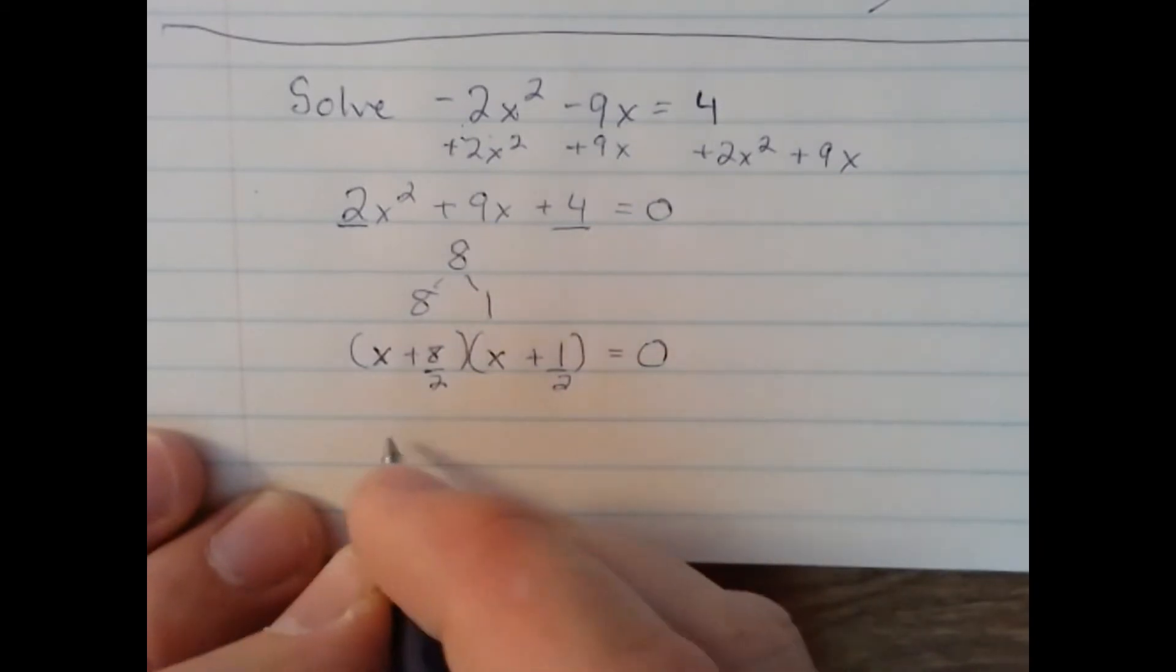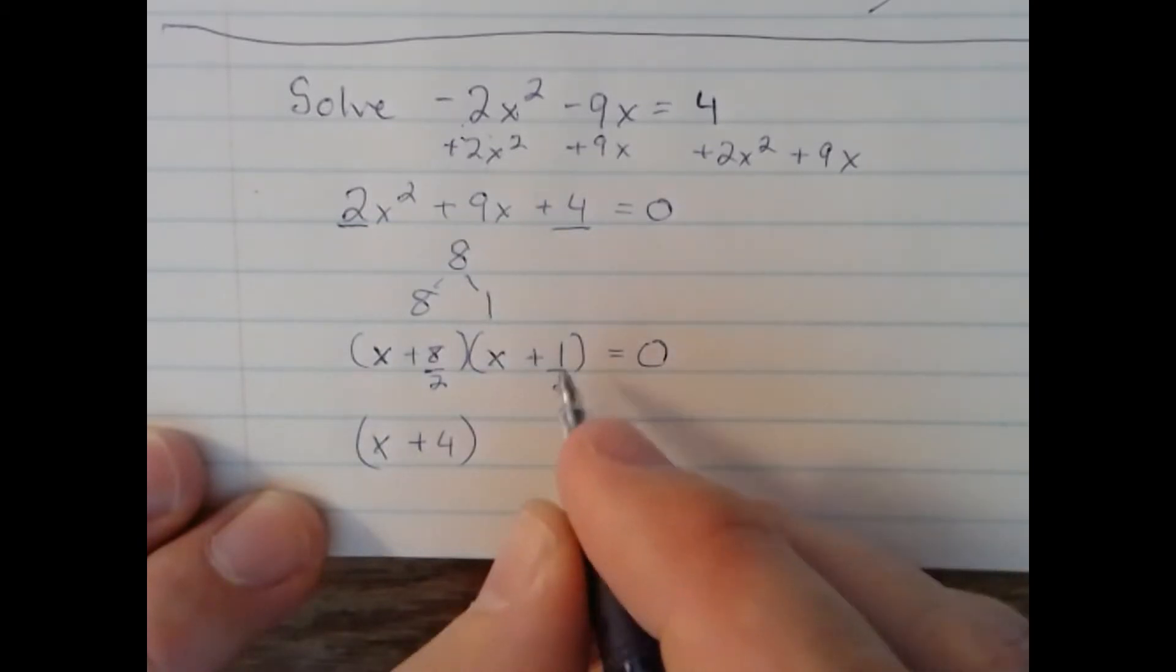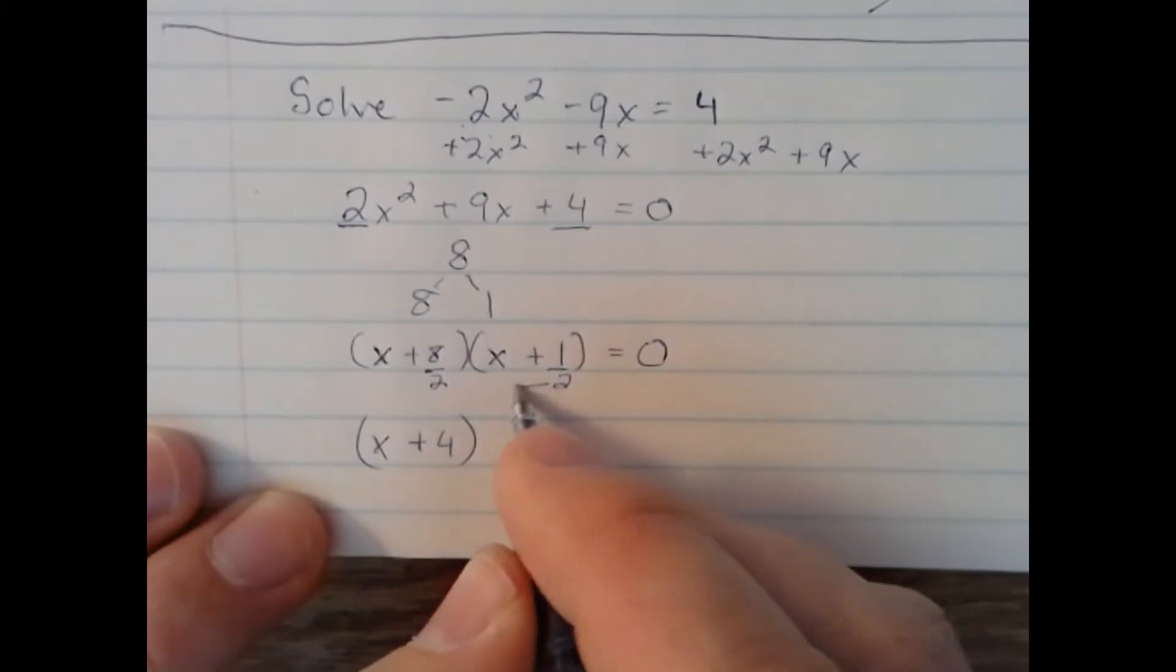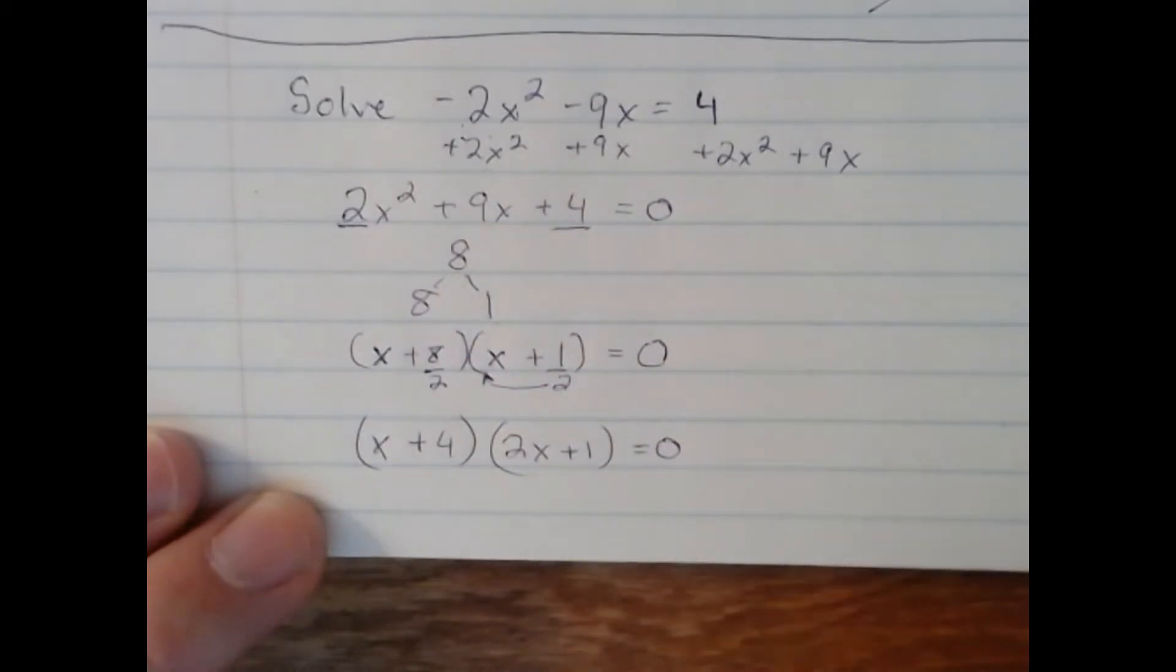And if it divides, great. x+4 divides perfectly. That's one of the binomial terms. 1 divided by 2 does not divide evenly, so I'm going to bring that 2 out in front of that term: 2x+1. And I'm equal to 0.